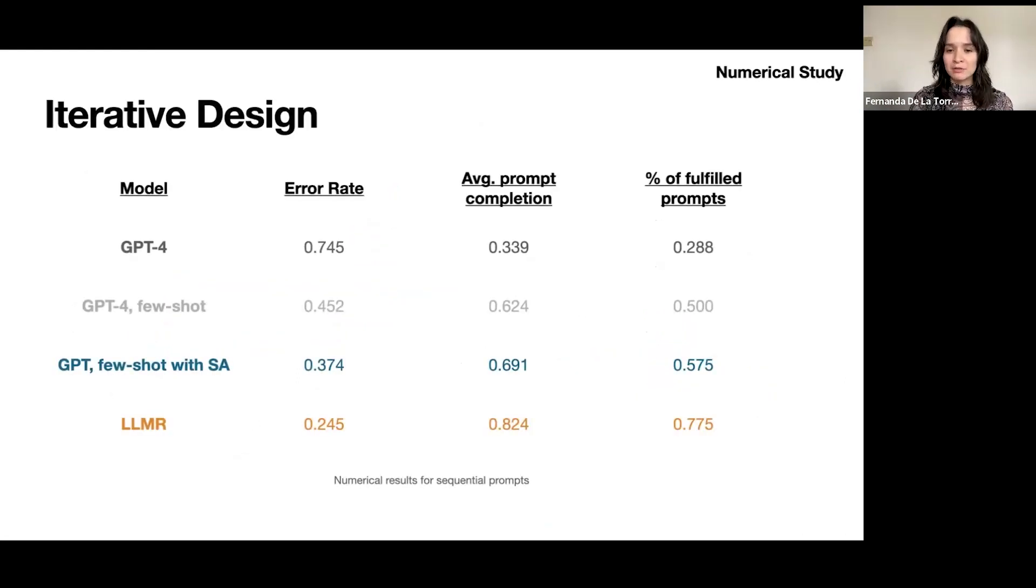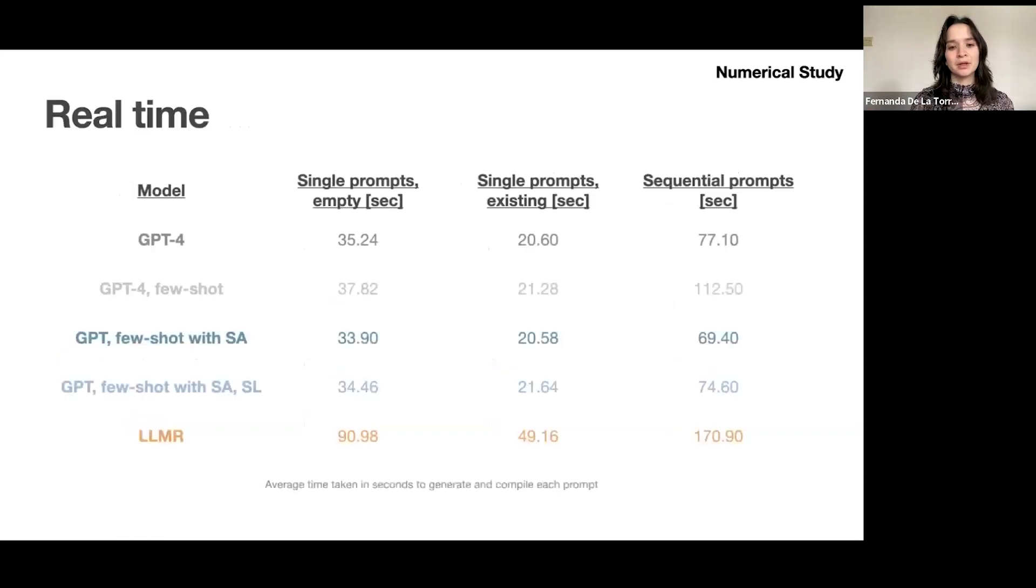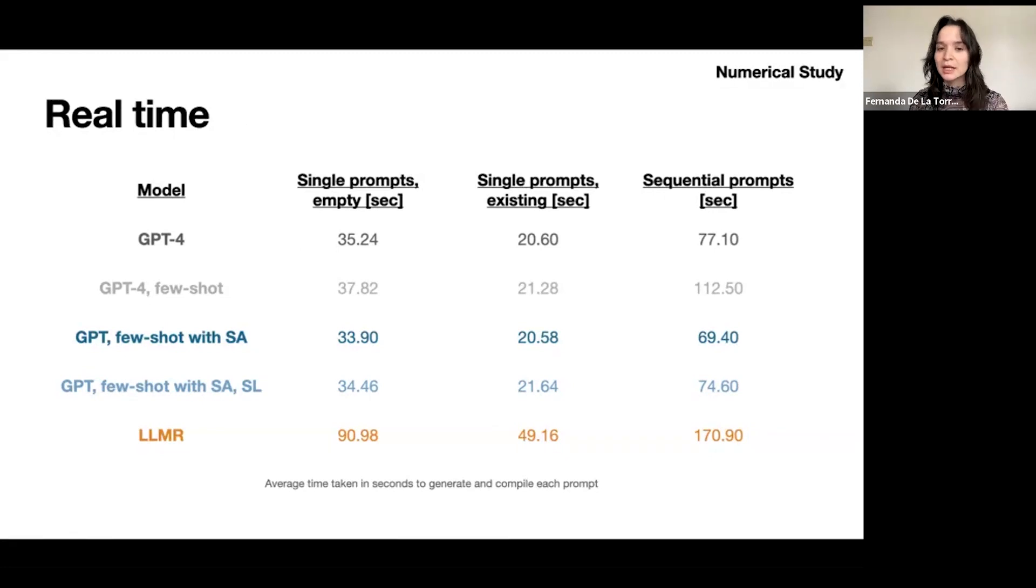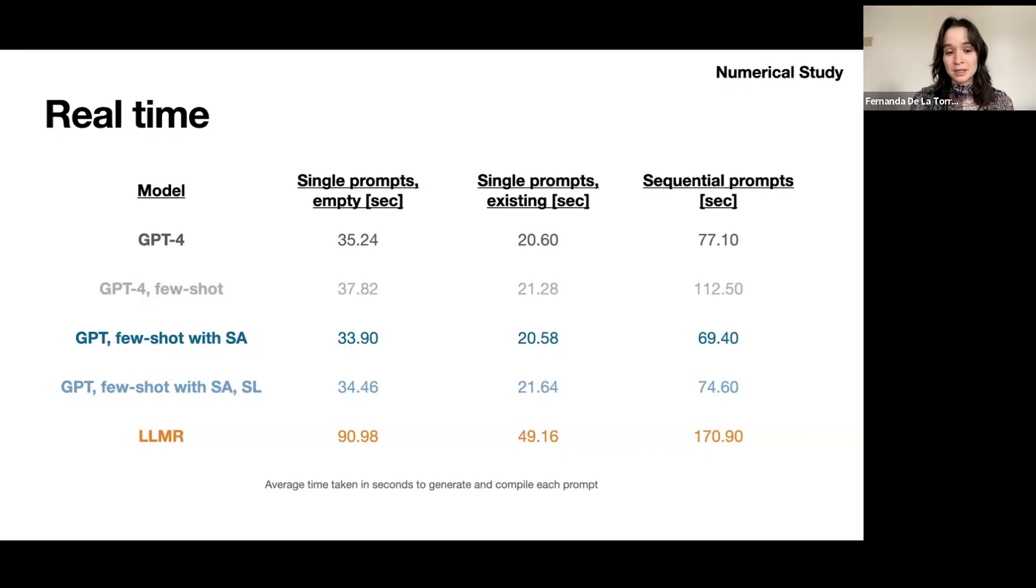We also measured average prompt completion, so in the case of the sequential prompts, where we have more than one prompt, and we have a few steps of prompts that depend on the previous prompt, we measure how many of those prompts was LLMR able to complete. And we find that for LLMR with all of the modules turned on, that number is much higher. We also reported the amount of real time that it takes to execute, to generate, compile, and then execute all the code. We find that LLMR does take more time, but this is because there are more modules being activated and used in order to get better performance.